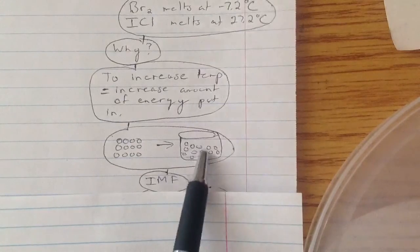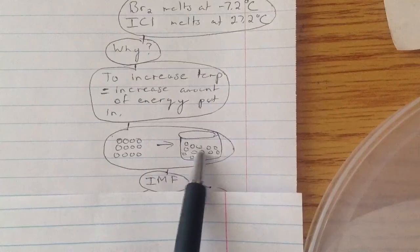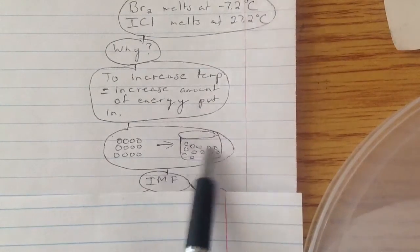So in a liquid, that's why it can move and adopt the shape of its container, because it broke free of these bonds and is now moving around.